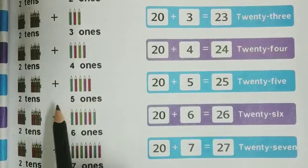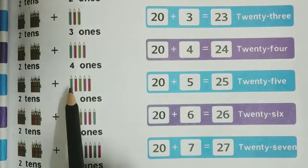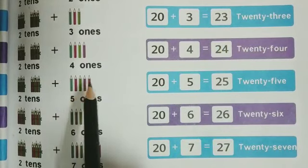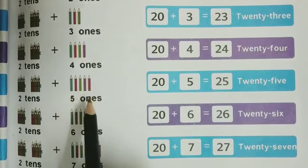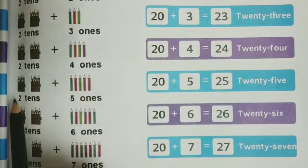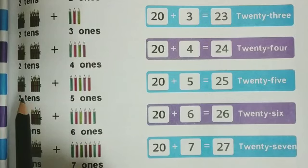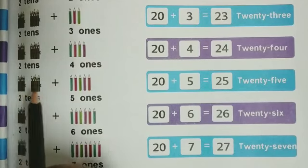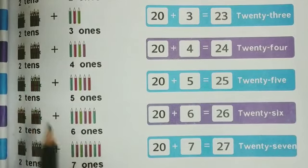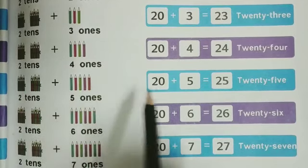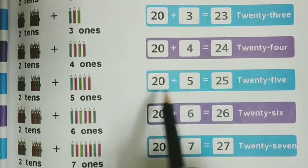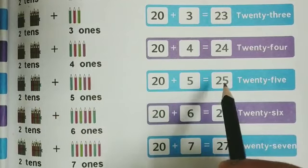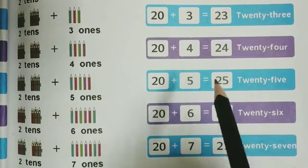Next one: one, two, three, four, five — 5 ones. Five pencils plus 2 tens means a group of 20 pencils. We will add them: 20 plus 5 equals to 25.